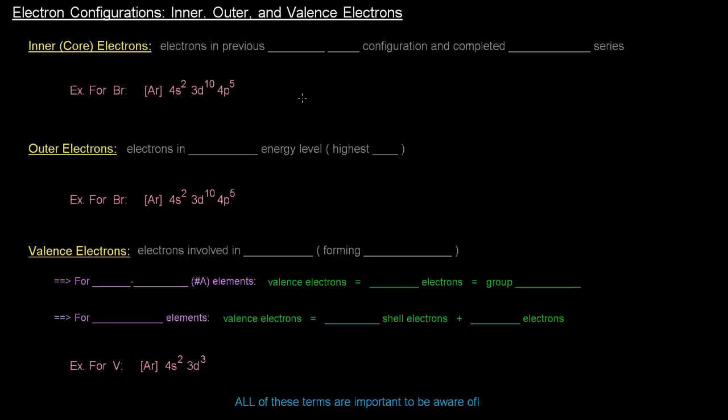In this video, I really just want to cover some definitions. Basically, there's inner or core electrons, outer electrons, and valence electrons, and it's important to know what these things are and what they mean.